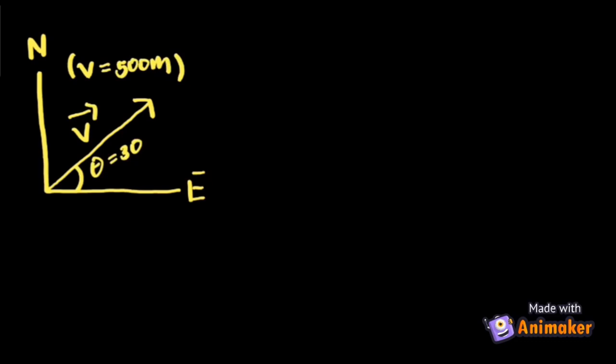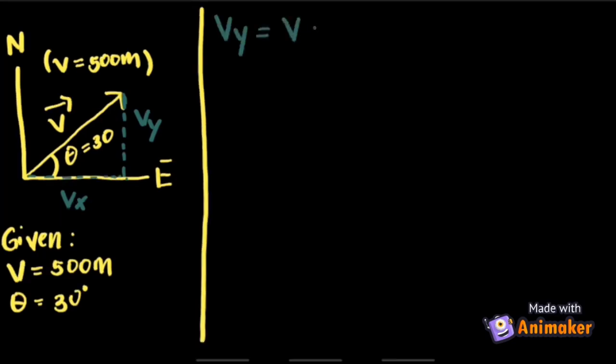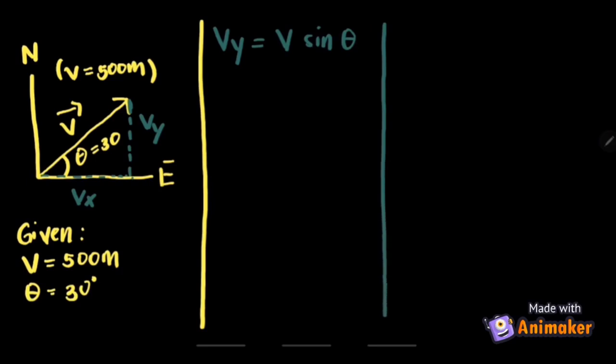Using this information, we can now proceed to specify vectors coordinate when magnitude and angle is given. For example, a vector represents a displacement of 500 meters in a direction 30 degrees north of east. Resolving its components, we have X and Y vector represented by dashed lines. Take note, the given are 500 meters for magnitude and 30 degrees north of east for its direction. Recall that to get the magnitude of the components, we will use V_y equals V sin theta for Y component, and V_x equals V cos theta for X component.